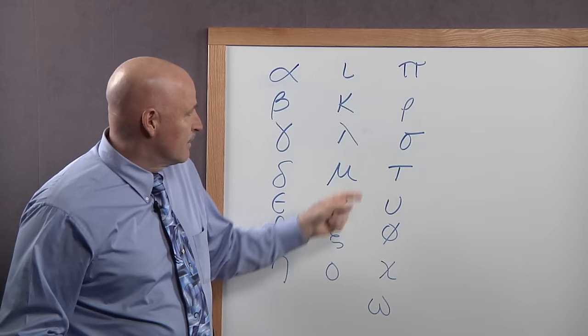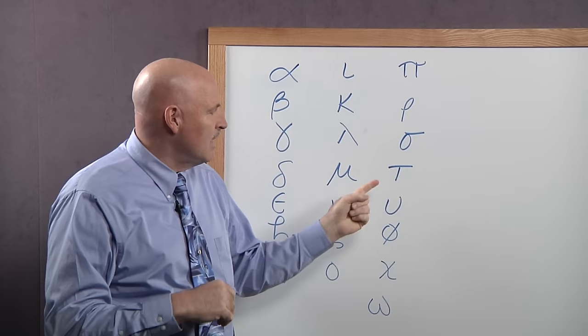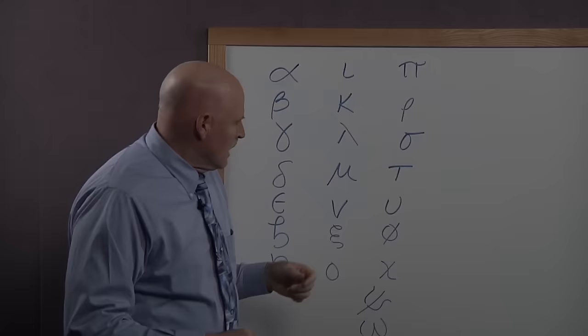Okay, so let's try it from here again. Ksi. Omicron. Who's this? P, rho, with a sigma, tau, whoopsalon.